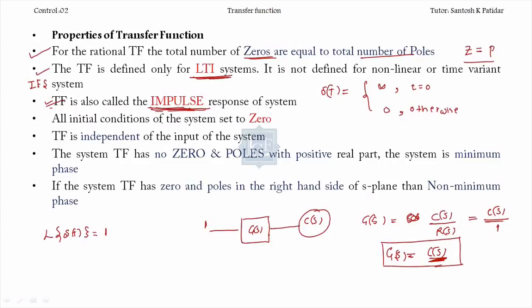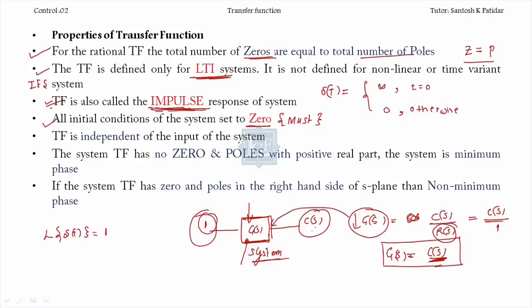For the transfer function, all initial conditions of the system must be set to zero - this is a must condition, discussed in the last class and it has been asked twice in GATE. The transfer function is independent of the input of the system - whatever input you apply does not matter. The transfer function is a system property, not an input or output property. It is a fixed property of the system.